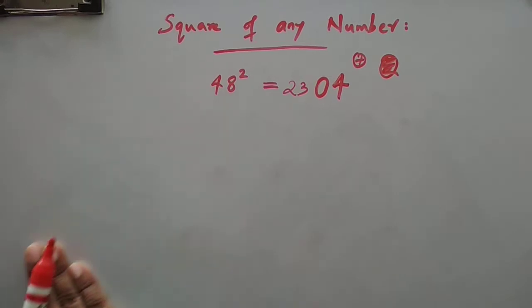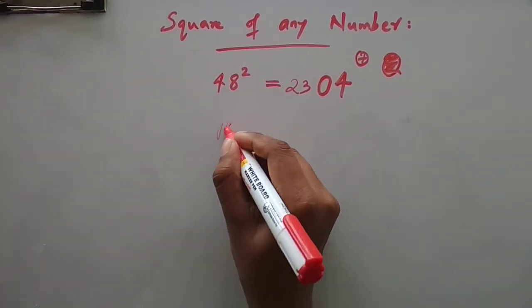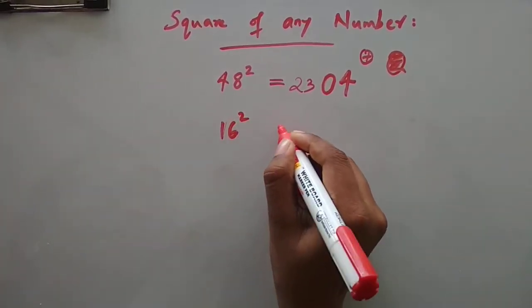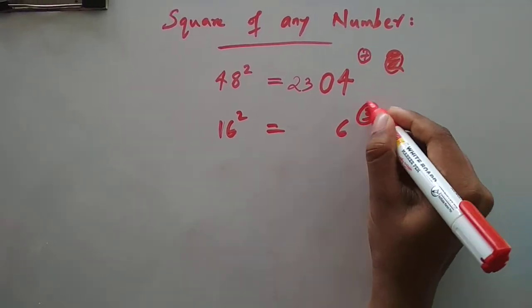So the next number we will take is a smaller number, it will be 16 square. 6 square is 36, 3 we have kept aside.